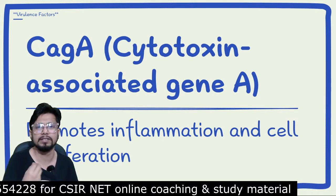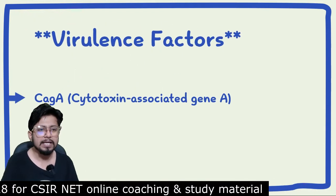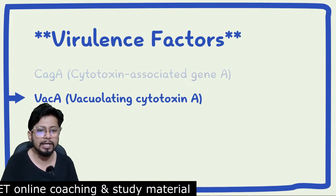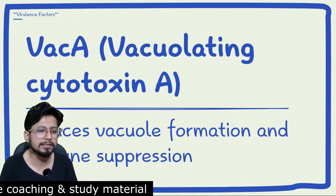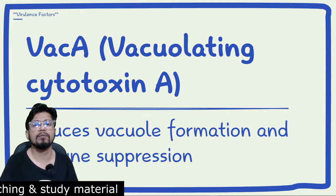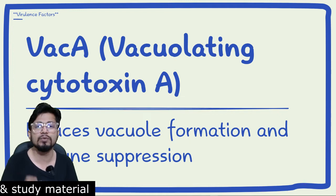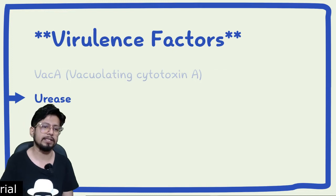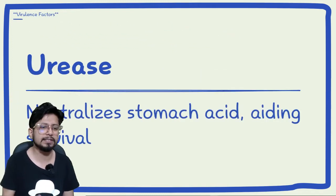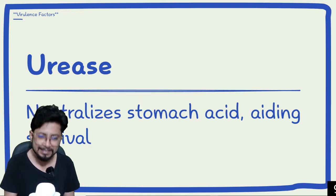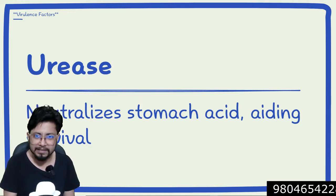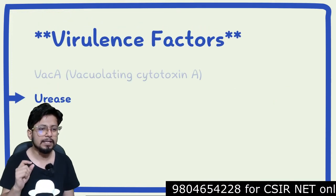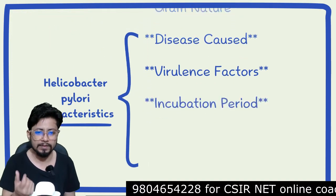CagA relates to Helicobacter pylori's cytotoxin activity and its ability to damage tissue. The second virulence factor is VacA — vacuolating cytotoxin A — which induces vacuole formation and immune suppression in the host. A third important factor is urease, which neutralizes stomach acid, aiding the survival and colonization of Helicobacter pylori in the stomach lining.